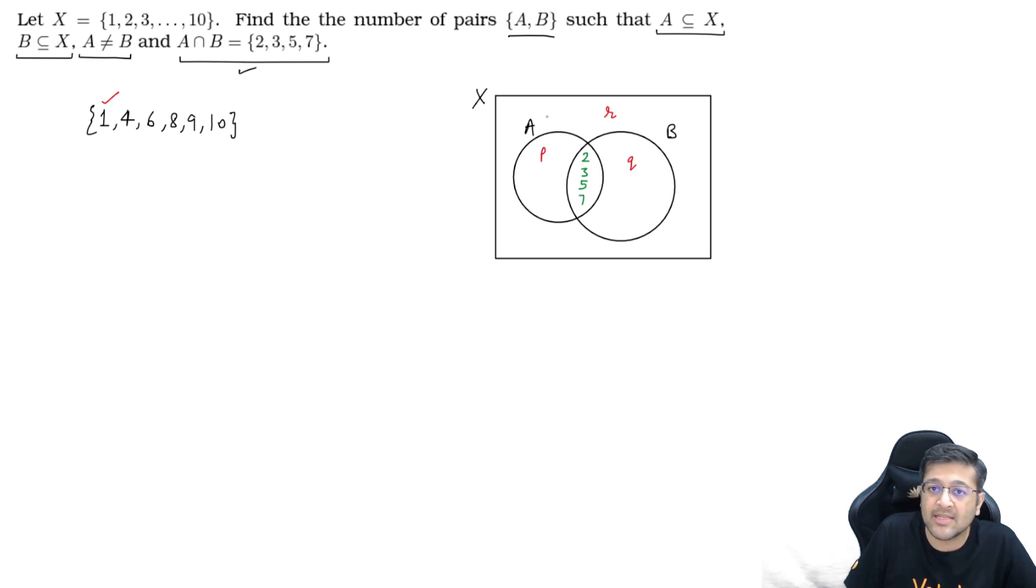The element 1, how many options does it have? It can either go into the area p, area q, or area r. There are three options for the first element. For the second element 4, it can also go into p, q, or r. If it goes into p, it means it's inside set A, not inside B. So into p, into q, into r, it again has three options. So like this, every element has three options. And there are six such elements. But there is a problem here.